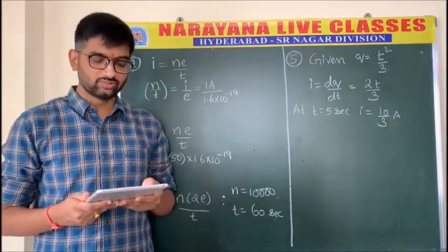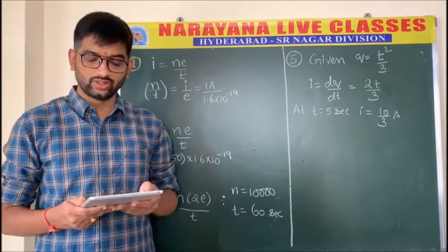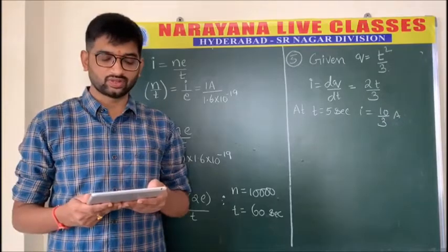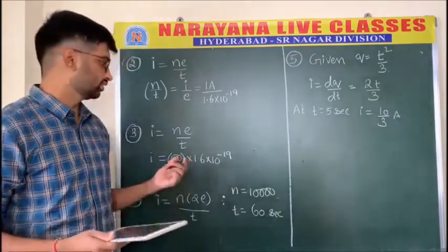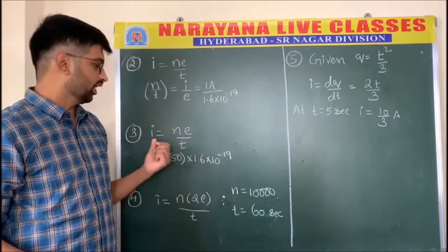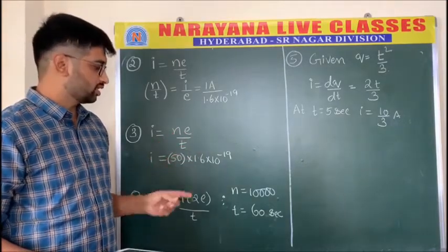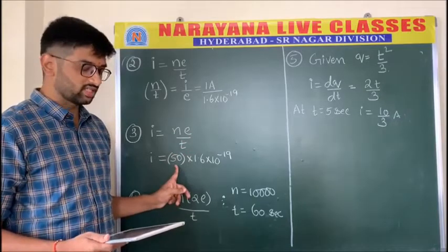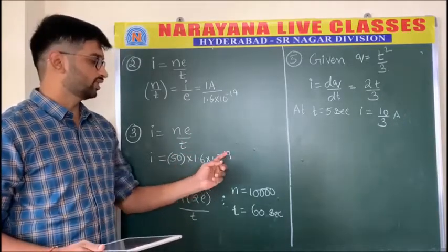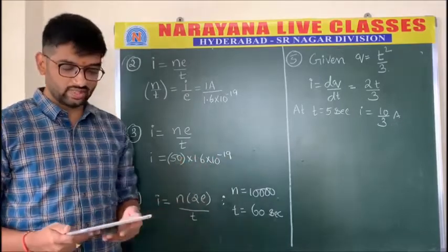Problem number three: it is possible to measure the passage of 50 electrons per second with a certain sensitive device. This corresponds to a current of — similarly I = ne/t, so I = (n/t)×e = 50 × 1.6×10⁻¹⁹, which gives the required answer.